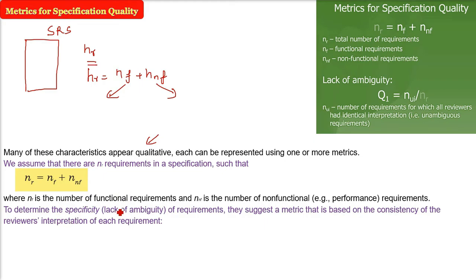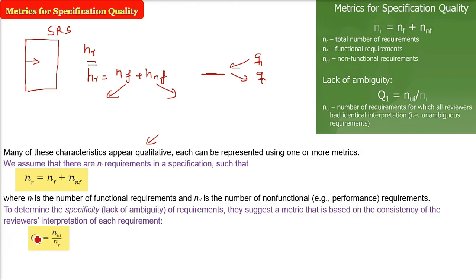But, in order to find out, say, a specific SRS function or value or metric specificity, two people may understand the same requirement in different ways. They may interpret the same requirement in different ways. This may be possible. So, how do we go about it? We have another metric, which is nui by nr. nui is the number of requirements for which all reviewers have identical interpretation. That is, you and me both are interpreting the requirement in the same way.